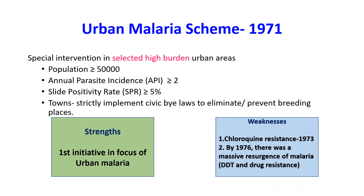Under the Urban Malaria Scheme, special interventions were given in selected high-burden urban areas. Selection was based on population greater than 50,000, annual parasite incidence greater than or equal to 2, and slide positivity rate greater than or equal to 5 percent.